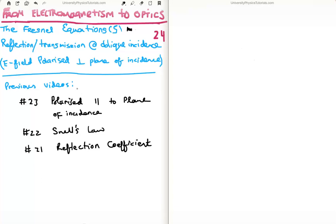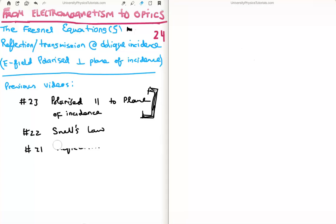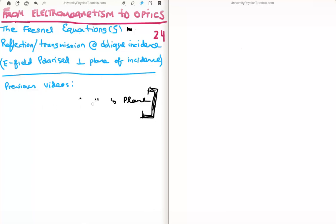The previous video relevant to this is number 23, where I discussed the case when the electric field is polarized parallel to the plane of incidence. I did a very detailed video on that topic, so my current video follows directly from video 23. If you feel I've left out anything here you can go back to number 23 to find the answers. In video 22 I discussed Snell's law, and in video 21 I discussed the reflection coefficient for light incident on a surface at normal incidence.